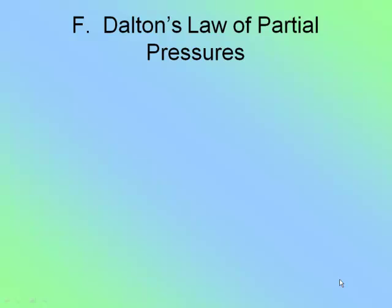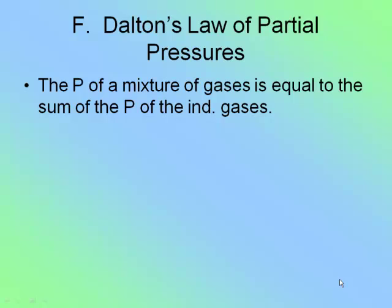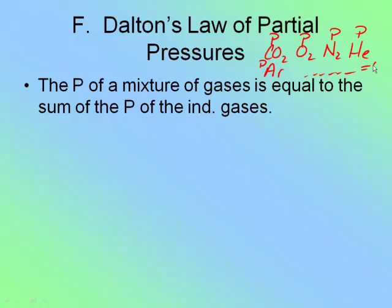Dalton's Law is actually pretty easy to understand if you think about it in terms of other things. What Dalton's Law says is the pressure of a mixture of gases is equal to the sum of the pressures of the individual gases. For example, air pressure is one atmosphere. That one atmosphere of pressure comes from the fact that air is made up of CO₂, O₂, N₂, helium, argon, and a whole bunch of other gases. When you add the pressure of all of these gases up, it equals one atmosphere.